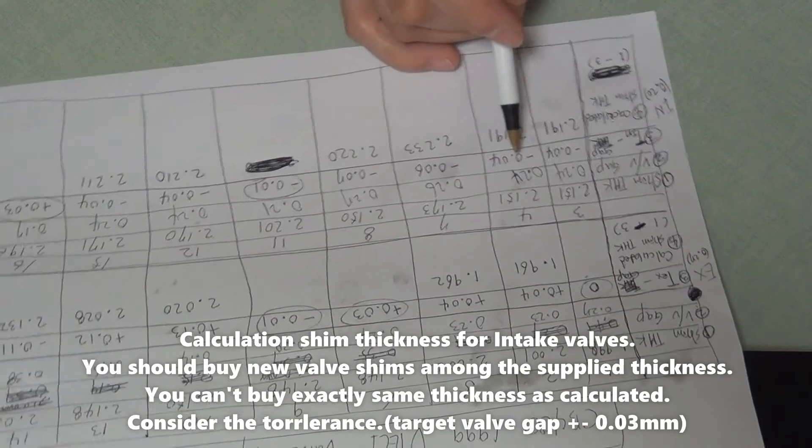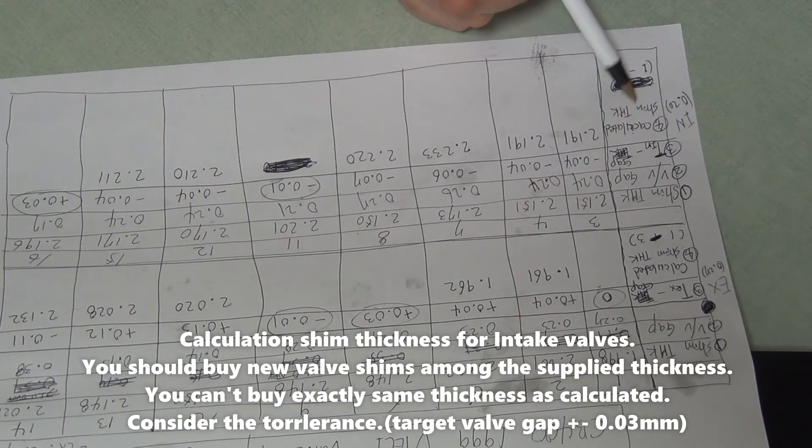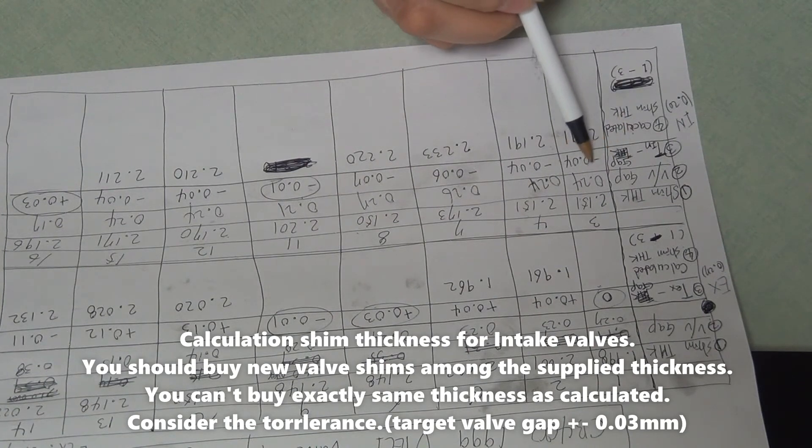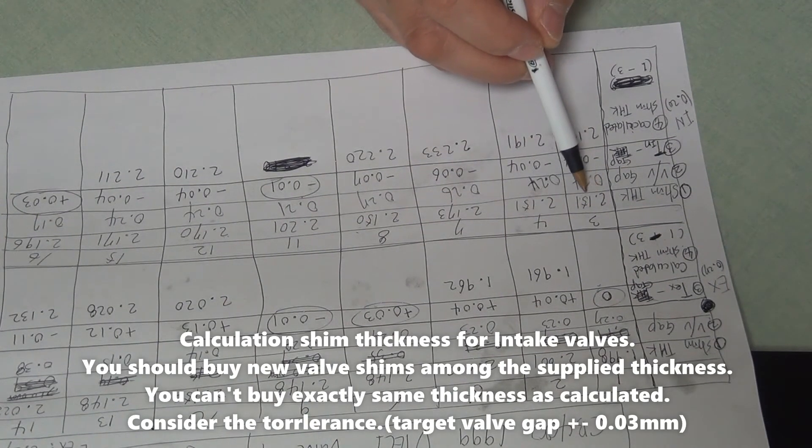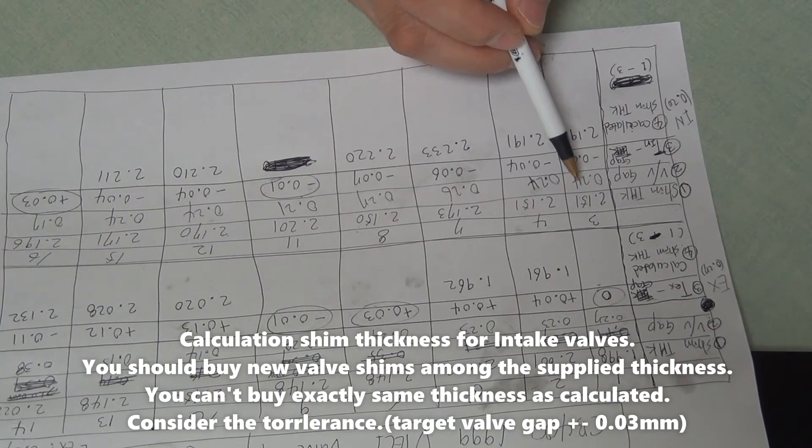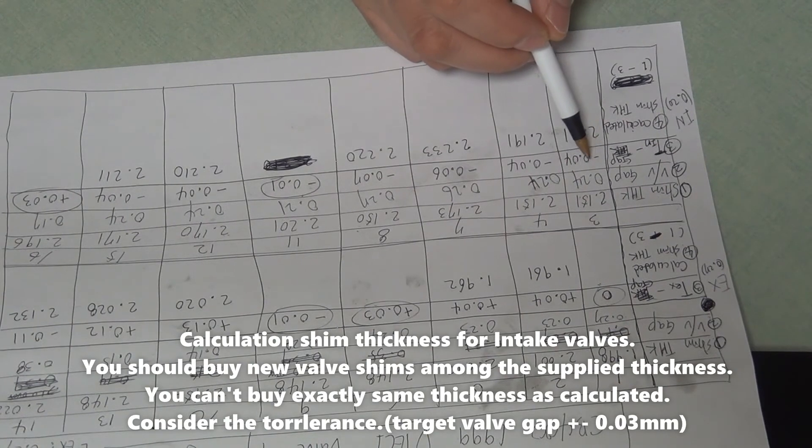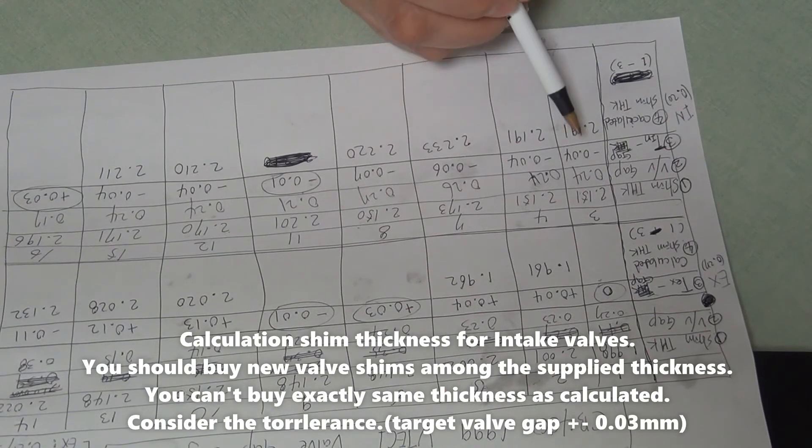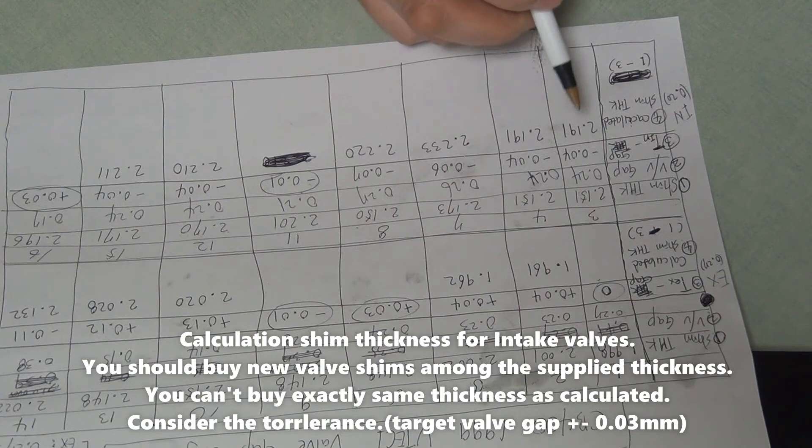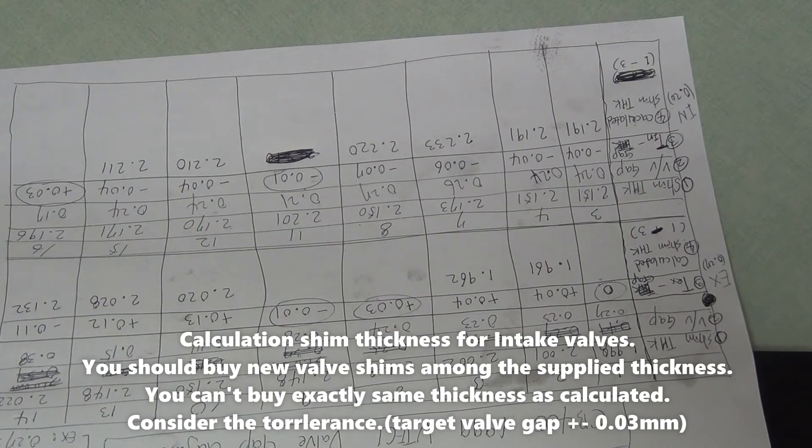The other valve calculation is shim thickness, shim thickness minus calculation value. So for example number 3, 2.151 shim thickness minus minus 0.04. It means plus. So finally 2.151 plus 0.04, so it makes 2.191. The other value is almost the same.